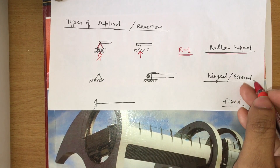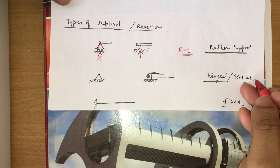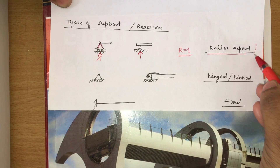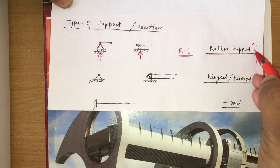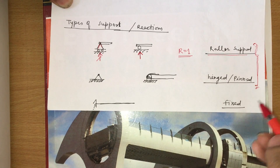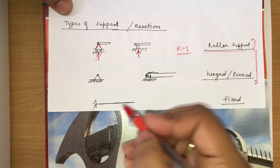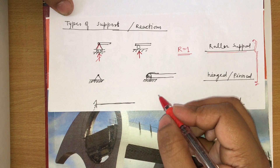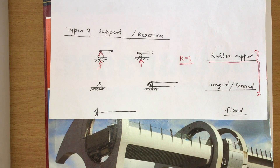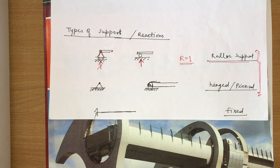The second type of support is the hinge or pin support. These are very basic supports you will always find in your problems, so it is very important to know about hinge support.